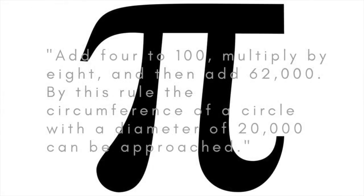It gives an approximation to pi with this description: add 4 to 100, multiply by 8, and then add 62,000. By this rule, the circumference of a circle with a diameter of 20,000 can be approached. This gives a value of 3.1416, which is accurate to three decimal places.